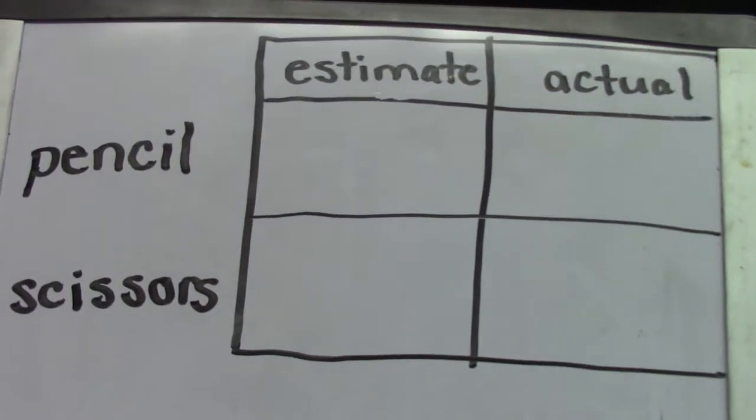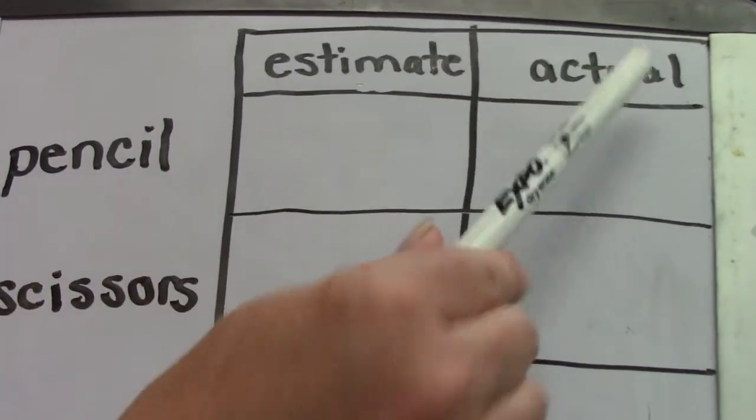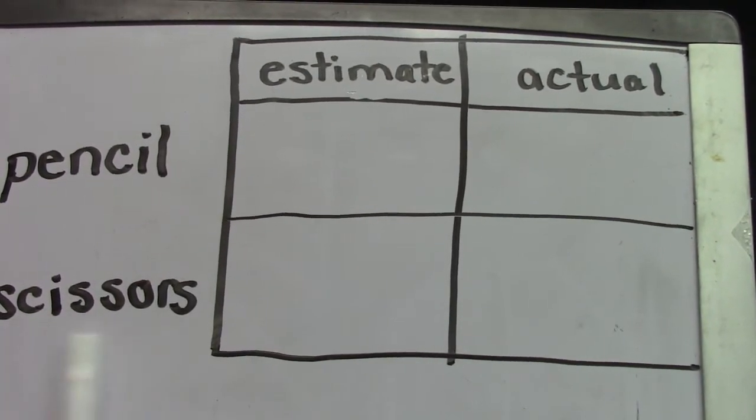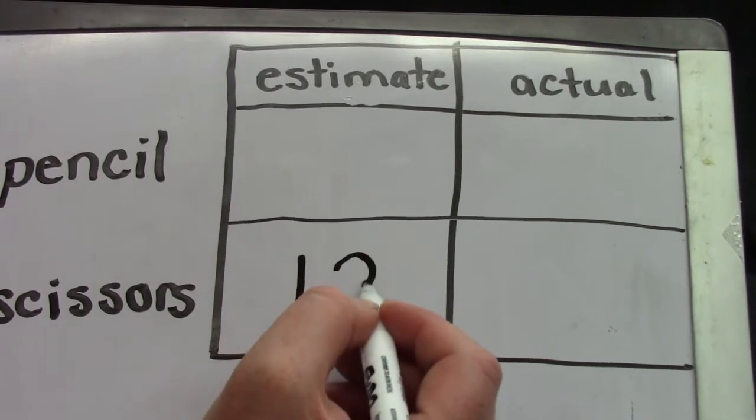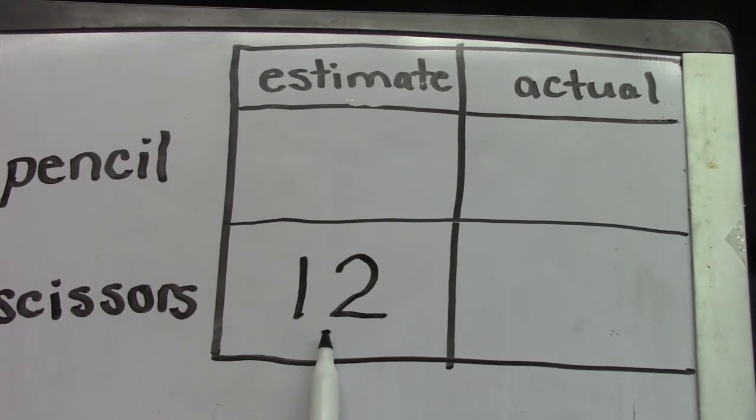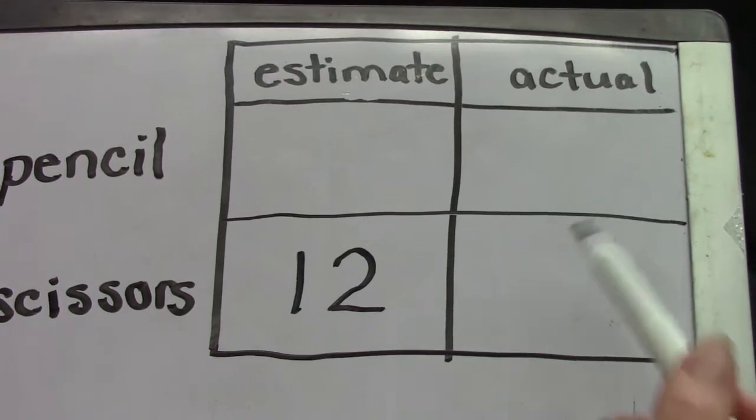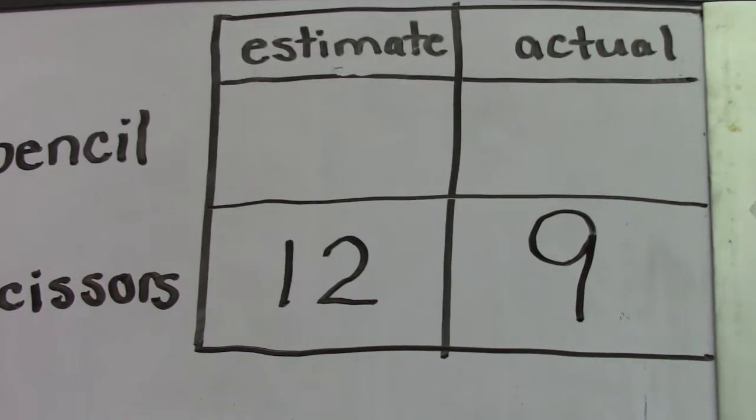Here on my chart I have pencil and scissors, estimate and actual weight. Well, we did our scissors first and my estimate or my guess was twelve tiles. Hmm, was it twelve tiles? No, actually it was nine tiles.